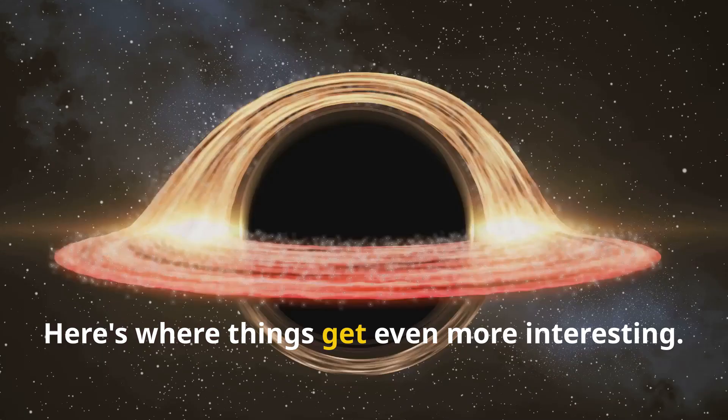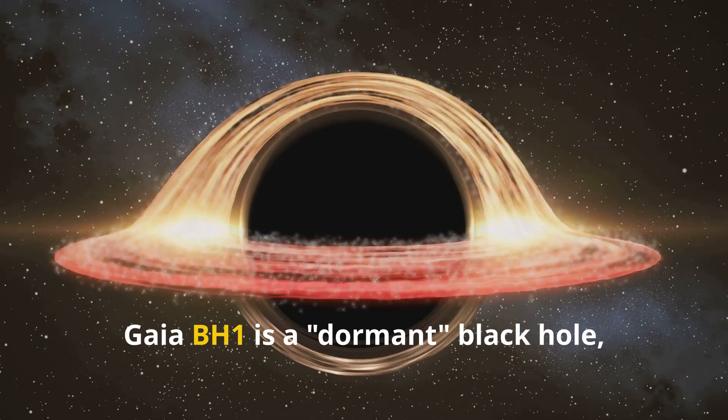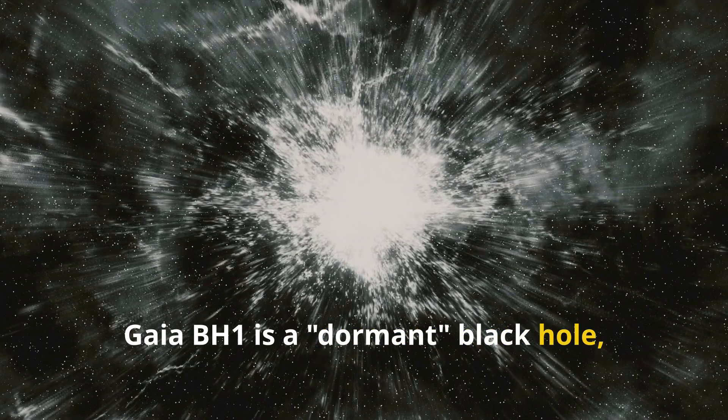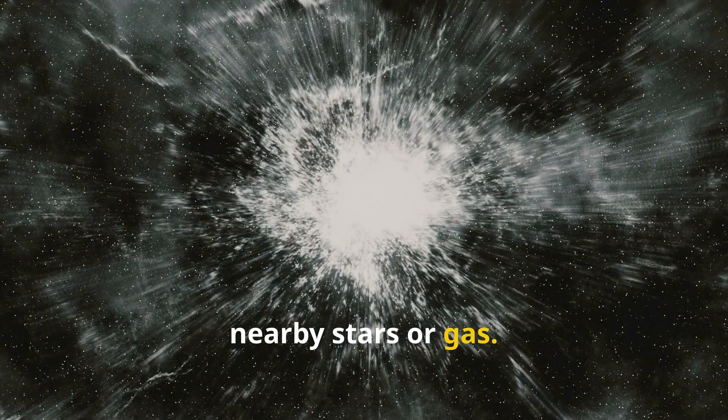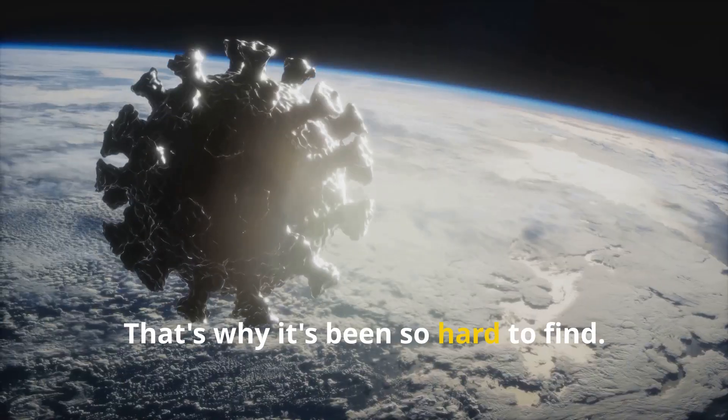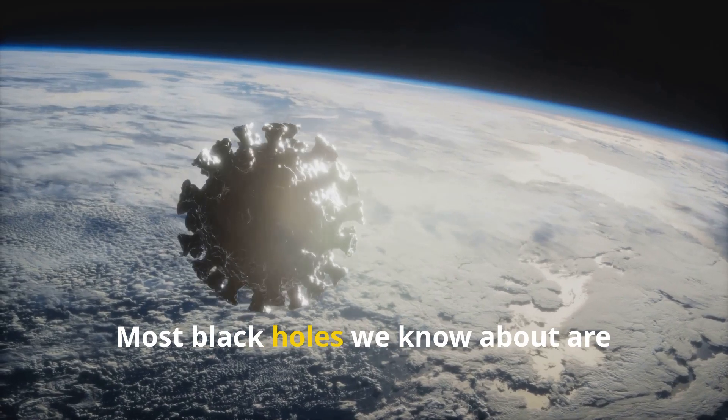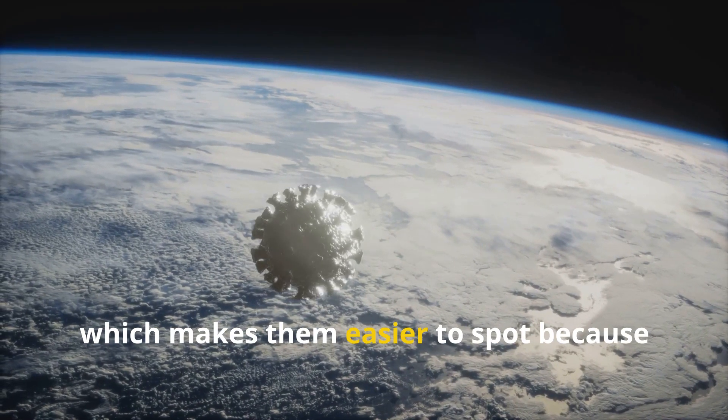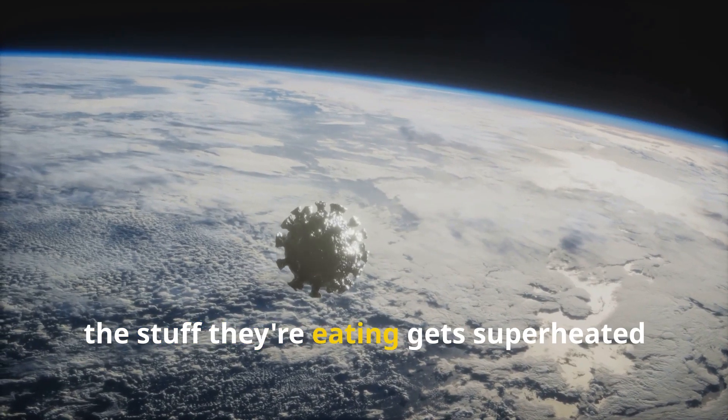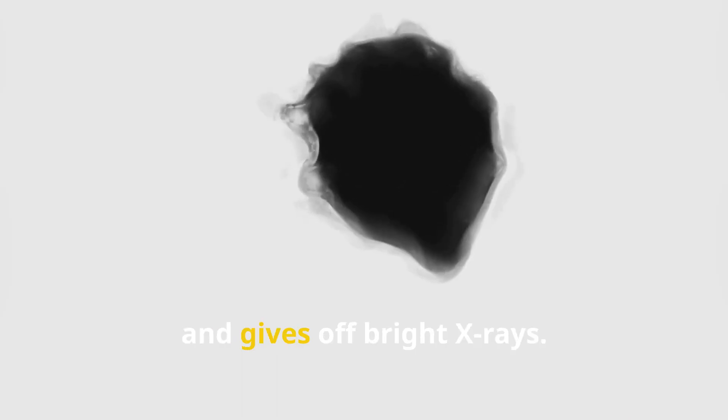Here's where things get even more interesting. Gaia BH1 is a dormant black hole, which means it's not actively feeding on nearby stars or gas. That's why it's been so hard to find. Most black holes we know about are actively gobbling up matter, which makes them easier to spot because the stuff they're eating gets superheated and gives off bright x-rays.